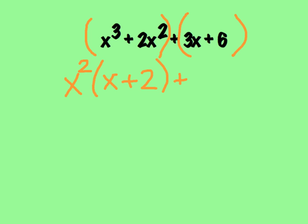Now I need to factor out my GCF in my second binomial, which is 3x plus 6. So my greatest common factor is going to be 3. When I take a 3 out, I'm left with x plus 2.